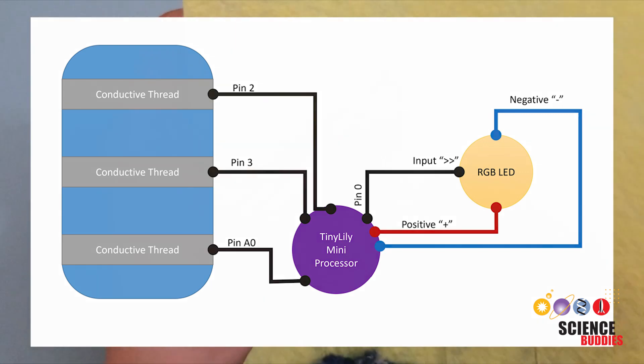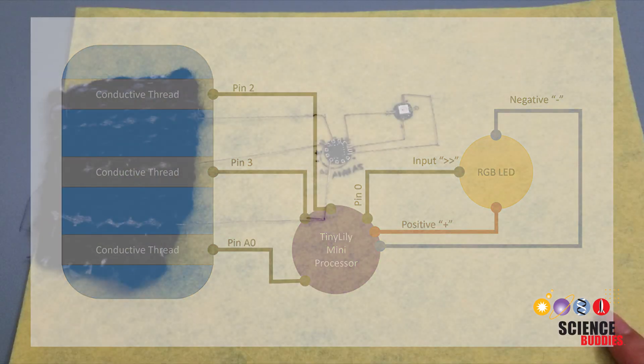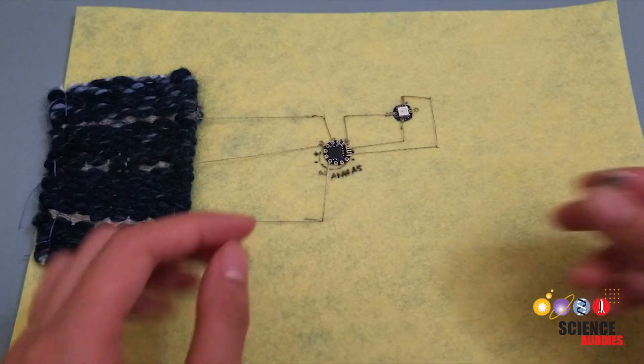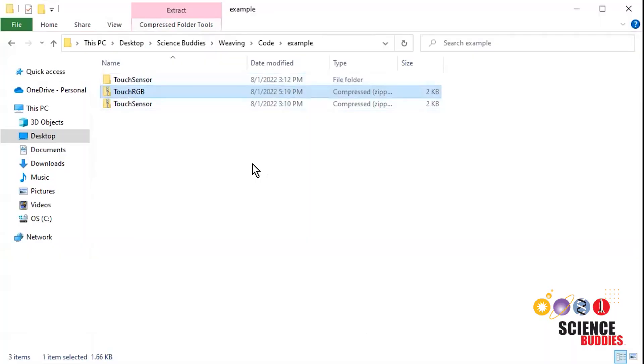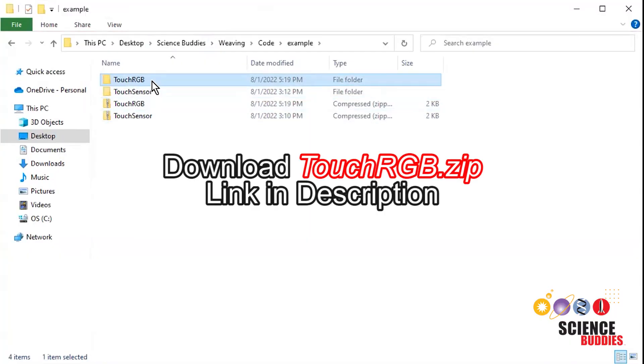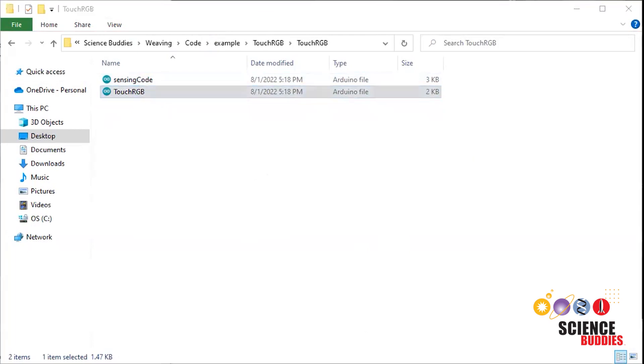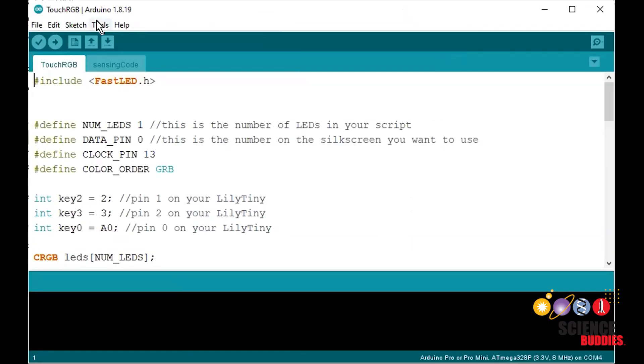Here is a circuit diagram for clarification. Connect your Tiny Lily to the computer using the mini-USB adapter and the USB cable. Download touchrgb.zip, extract the folder, then open touchrgb.ino in the Arduino IDE.